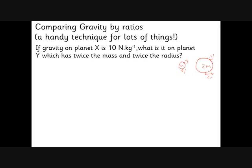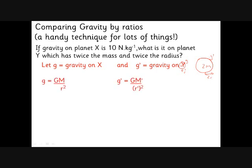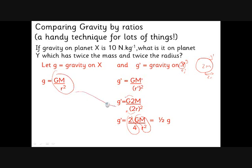When you've done lots of practice on these you'll probably not need to draw the picture, but this is a good safe way to start. G is GM/R² so G dash, our new gravity on planet Y, is G·M_dash / R_dash². We substitute in: M_dash is 2M and R_dash is 2R. The crucial thing is that it's (2R) all squared, so we square out the bracket and take the numbers to the front. We get 2 over 4, and since GM/R² equals G, the gravity on the new planet is half the gravity on the first planet.